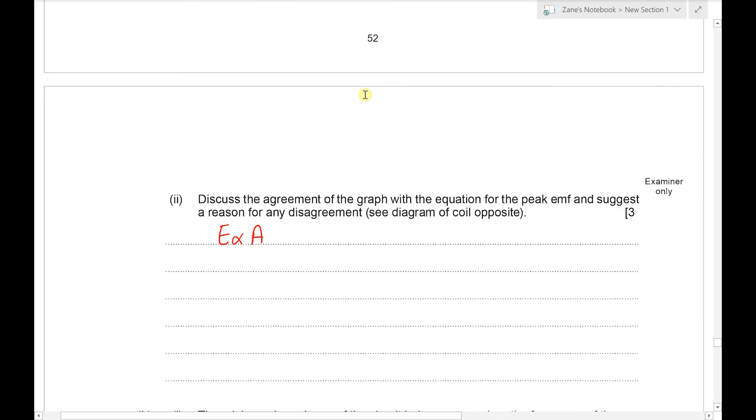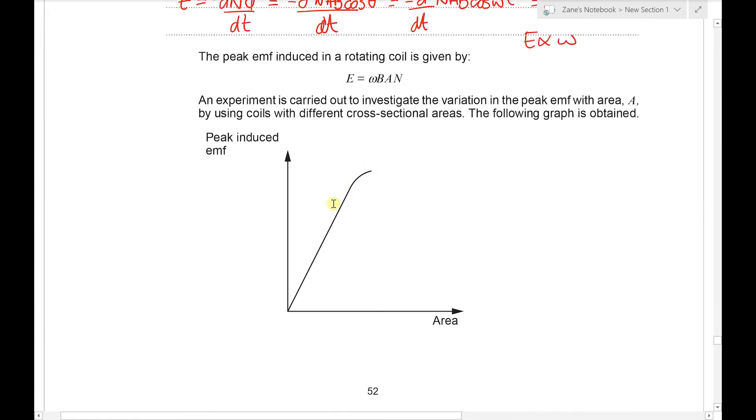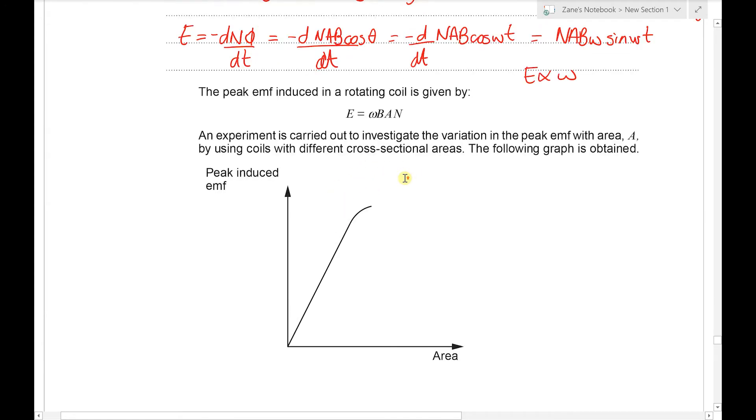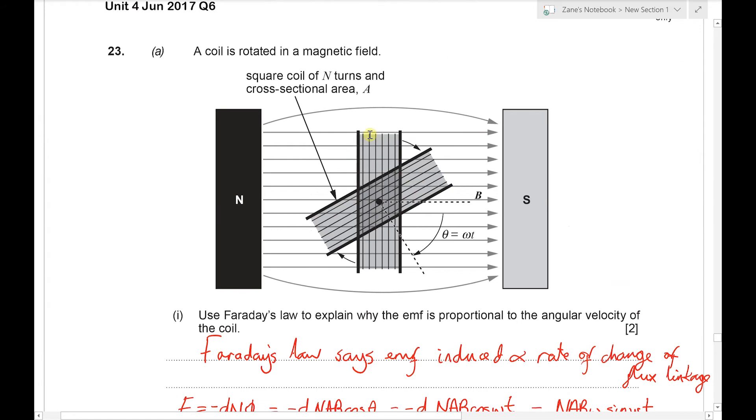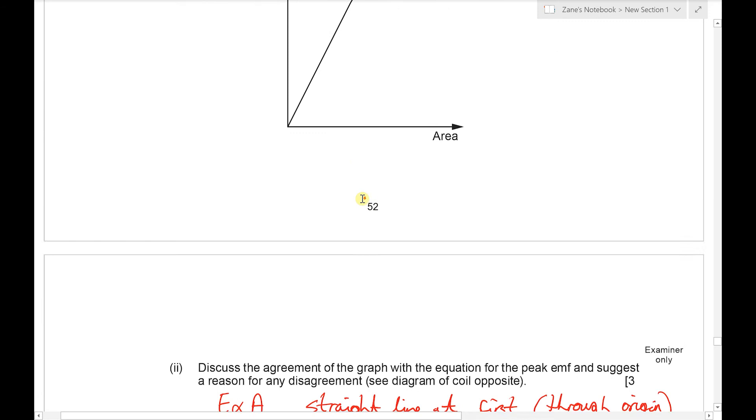And at first, we have a straight line through the origin. Now the curving at the end shows that once we get to a certain area then we're no longer in agreement with that expression. And that could simply be that once the coil gets too big it's outside the region of uniform magnetic field.